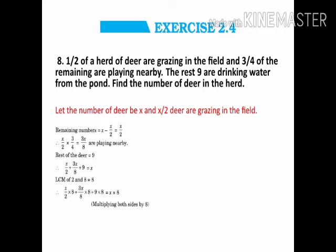For example, if you have 10 deer, then 10 divided by 2, 5 are grazing in the field. Just an example I have taken. So that means half of them are grazing in the field and half of them are inside.